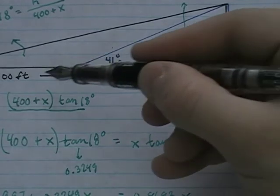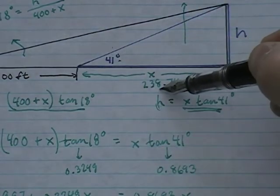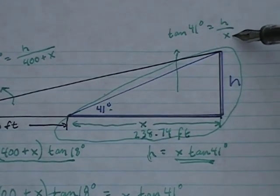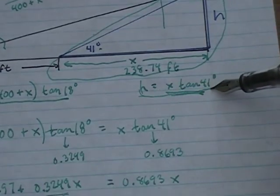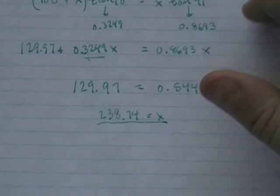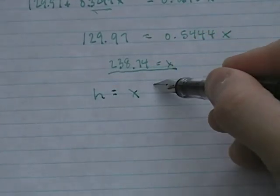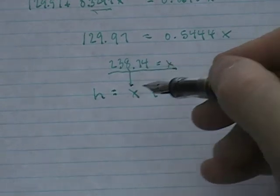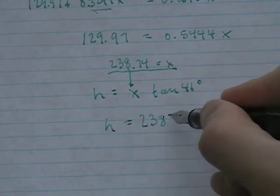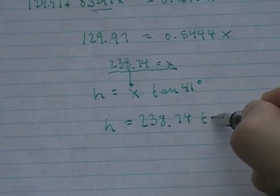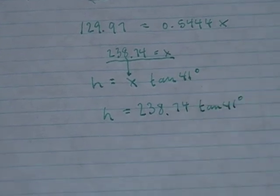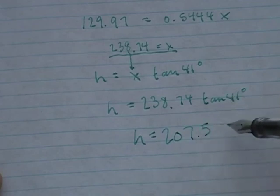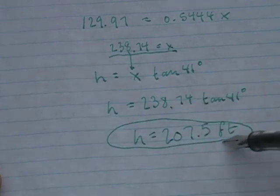Now I look at the blue triangle. I know x is 238.74 feet, and I already have the equation h equals x times tangent of 41 degrees. Plugging in: h equals 238.74 times tangent of 41 degrees. Typing that into the calculator gives h equals 207.5 feet. And that's indirect measurement.